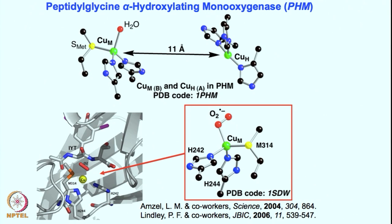A similar structure is true for DBM — once again there are two copper centers: copper M and copper H, also known as copper B and copper A. This is the site that is going to be the active site for the copper-oxygen reaction. Quite interestingly, there is a methionine binding, and one can assume that this sulfur would be very reactive towards the reactive copper-oxygen species and may get oxidized to sulfoxide or sulfone. But nature has designed it so that selective hydroxylation of the substrate can still be carried out by this copper center.